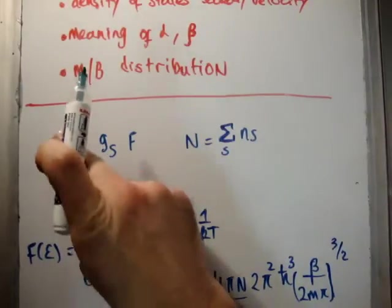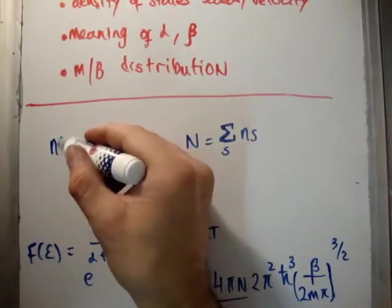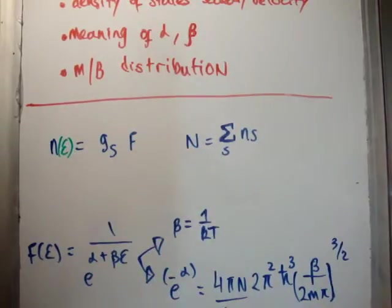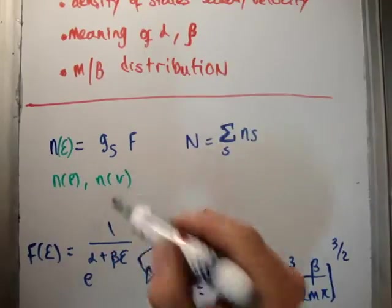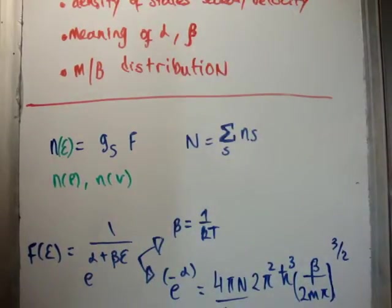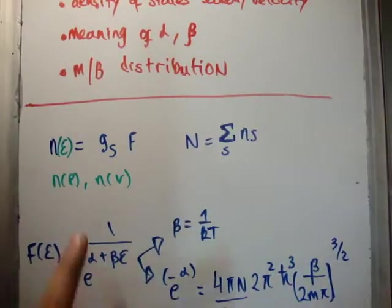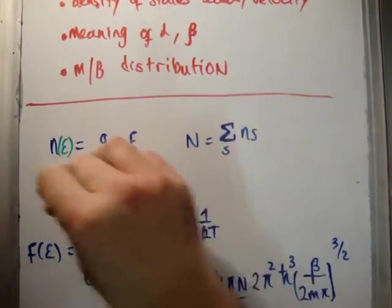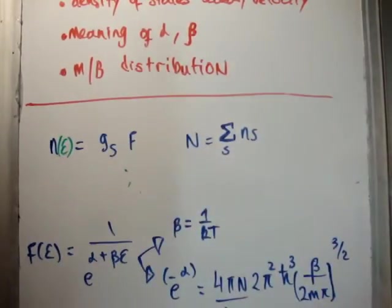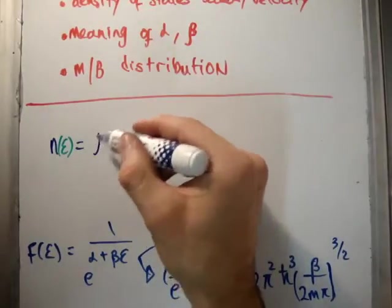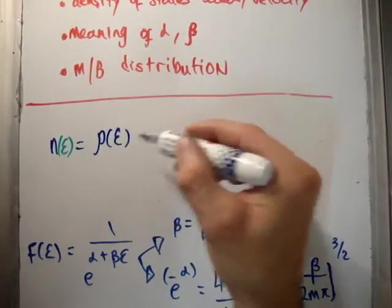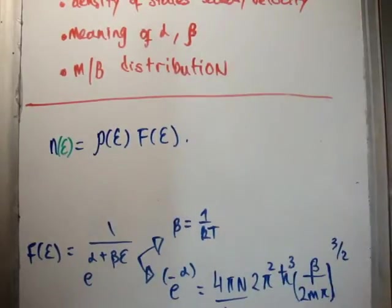That means we no longer talk about n sub s. We talk instead about n a function of something, whether it be energy, or n a function of momentum, n a function of velocity. So, what we are saying here, for example, this would be the number of particles with energy e, the number of particles with momentum p, the number of particles with velocity v. And if we go to this integral, or this continuum style, then we no longer talk about g, we talk about rho, and we say it is a function of energy, and we still have the occupancy function.